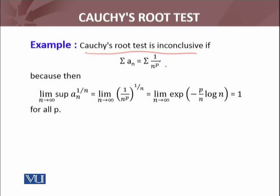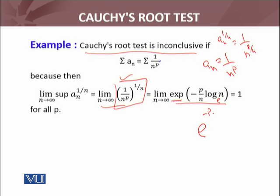Example: summation 1 over n^p. To discuss this example, we have to consider the nth term, which is 1 over n^p, and take a_n to the 1 over n, which becomes 1 over n to the p by n. We can write this cleverly using exponential and log properties as exp of minus p over n times log n, where the base is e, the irrational number.